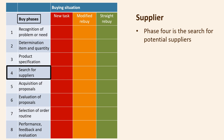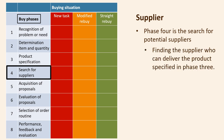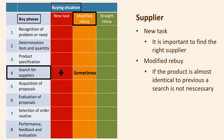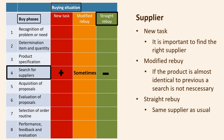In phase four, the search for potential suppliers and preliminary evaluation of their suitability, the buyer and his team look at which supplier should be chosen — finding the supplier who can deliver the product specified in phase three. When considering a new task, finding the right supplier is a crucial phase. In a modified rebuy, a search for a new supplier may not be necessary if the product is almost identical, but extensive changes will require finding a new supplier. In the case of a straight rebuy, the purchase can be made from the same supplier as usual.